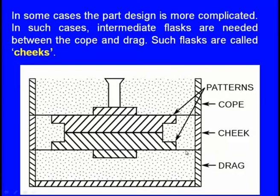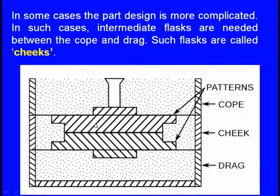Sometimes we also use an intermediate moulding box for complex geometries where two boxes are insufficient — this is the cheek. Here the section of the mould shows the drag as the lower moulding box, cope as the upper moulding box, and the cheek as the intermediate moulding flask. The pattern is placed inside, then these boxes are separated, the pattern is withdrawn, and molten metal is poured.